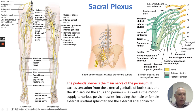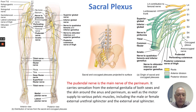The sacral plexus has roots with anterior and posterior divisions. Its nerves include the superior gluteal, inferior gluteal, nerve to the piriformis, tibial nerve, common fibular nerve (which together form the large sciatic nerve), nerve to the quadratus femoris and inferior gemellus, nerve to the obturator internus and superior gemellus, posterior cutaneous nerve of the thigh, perforating cutaneous, and pudendal. The pudendal nerve is the main nerve of the perineum, carrying sensation from the external genitalia of both sexes and the skin around the anus and perineum, as well as motor supply to the external urethral and anal sphincters.